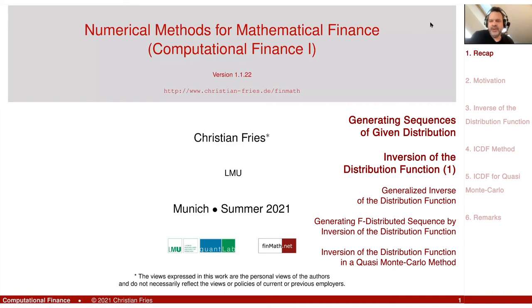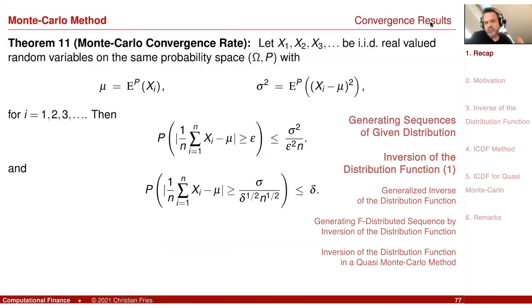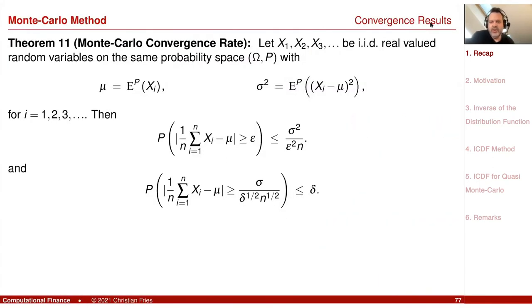Today in numerical methods, I'd like to continue on the generation of random numbers. Just to give you the context, we started a long time ago looking at the Monte Carlo method. We had some method to approximate the expectation of a random variable by this finite sum, where the sum was a sequence of IID real-valued random variables.